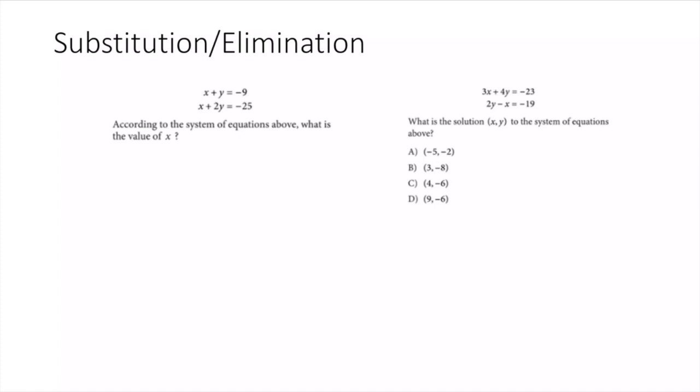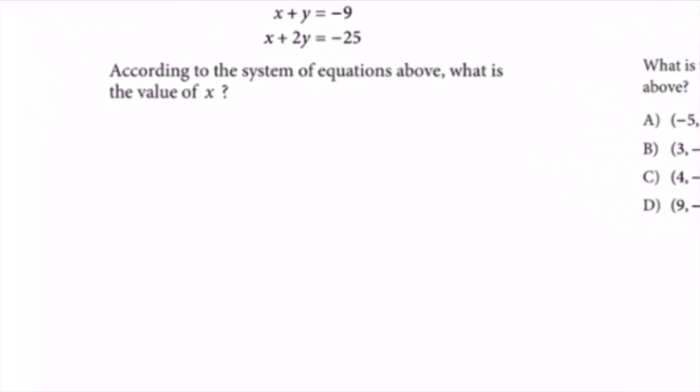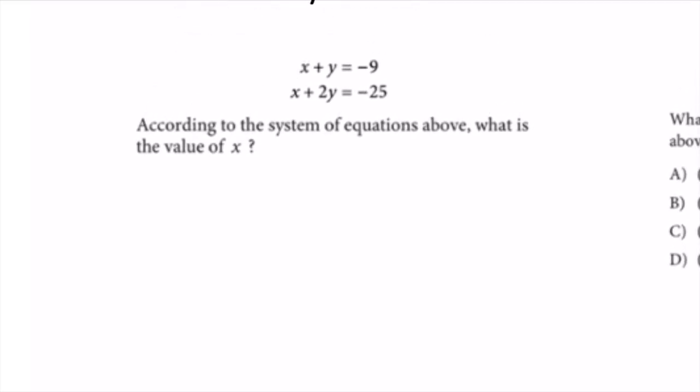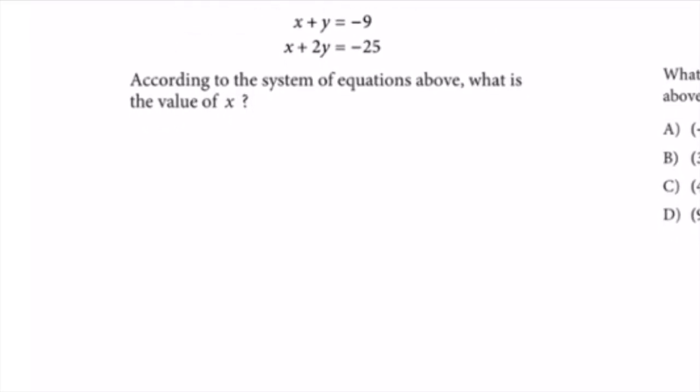Here are two substitution and elimination examples. First: x + y = -9 and x + 2y = -25. According to this system of equations, what is the value of x?